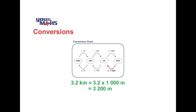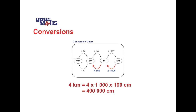In the next case we're going from kilometres to metres. We find kilometres on the chart, follow the arrow to metres, and multiply by 1000, giving a result of 3200 metres. The next example — kilometres to centimetres — involves a couple of jumps. Starting from kilometres and following the arrows left, we multiply by 1000 and then by 100, giving a result of 400,000 centimetres.